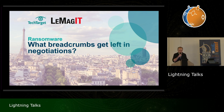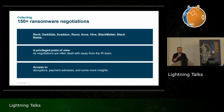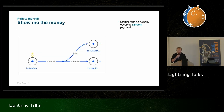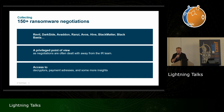I'm here to talk about the breadcrumbs that can be found in ransomware negotiations. I'm basically a ransomware negotiation collector. I've had copies of more than 150 negotiations involving groups like REvil, DarkSide, Avaddon, Ranzy, Avos, Hive, BlackMatter, and BlackBasta. It's a privileged point of view since negotiations are often handled away from the IR team. It helps getting access to decryptors, payment addresses, and more insight into the attackers. There used to be a decryptor for DarkSide that led to building a more generic decryptor based on a vulnerability found in the encryption routine for the Linux ESXi variant of DarkSide. The same was true for Hive.